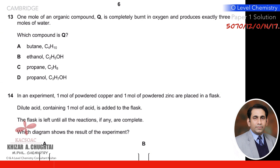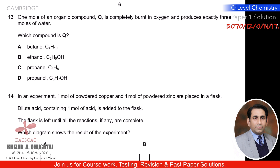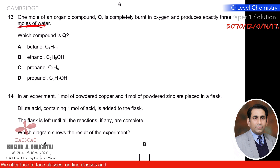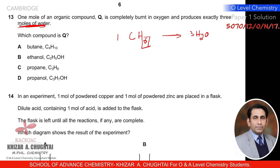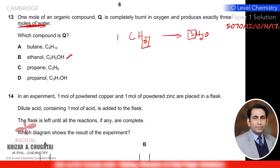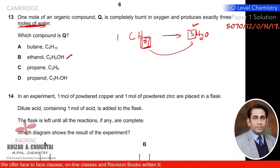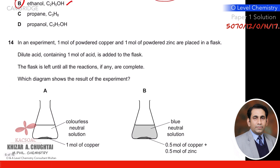Question thirteen: one mole of organic compound Q is completely burned in oxygen and produces exactly three moles of water. Three moles of water means the molecule contains 6 hydrogen atoms (since moles of water = half the moles of hydrogen atoms). So the compound must have 6 hydrogen atoms. We look for the hydrocarbon with 6 hydrogen atoms in its formula.